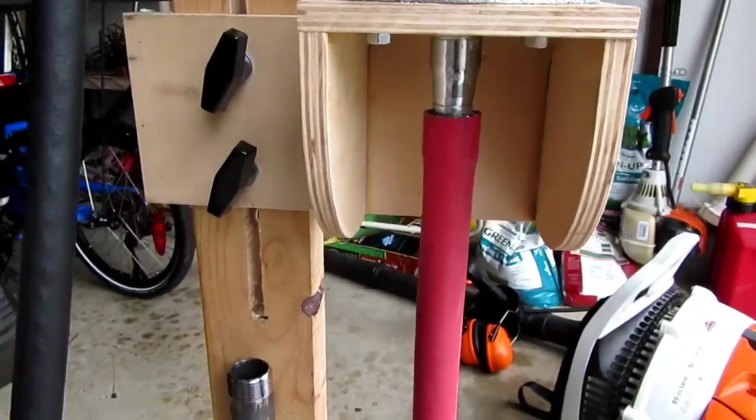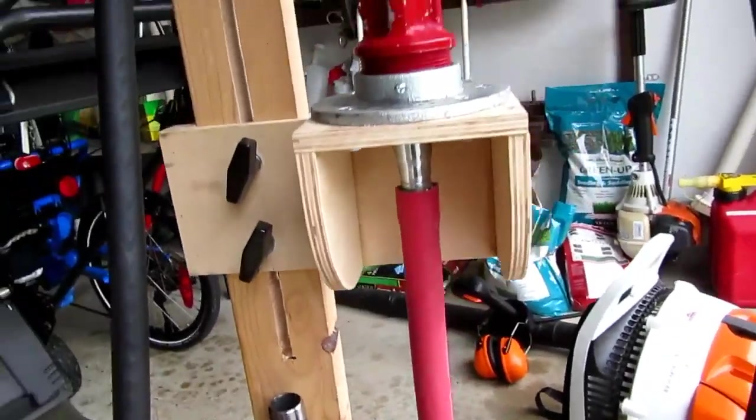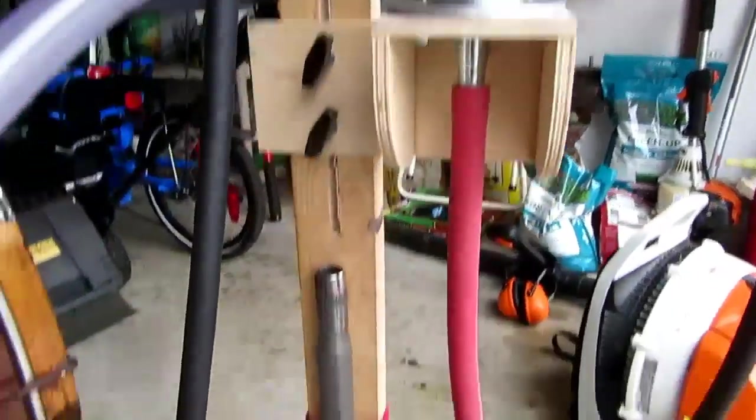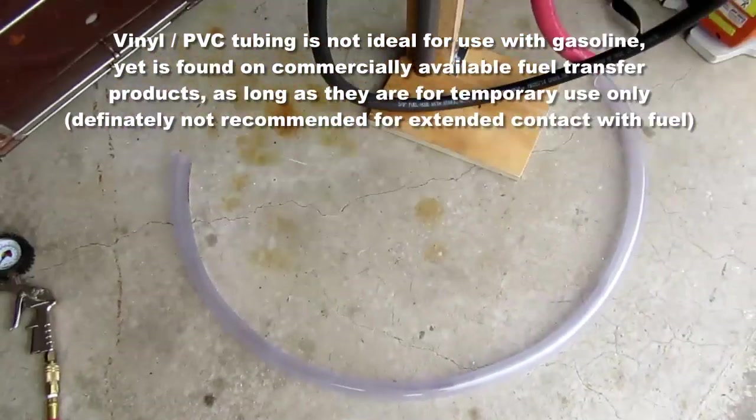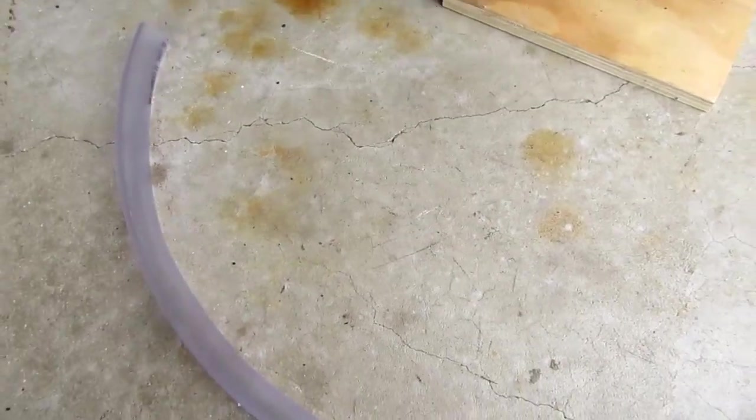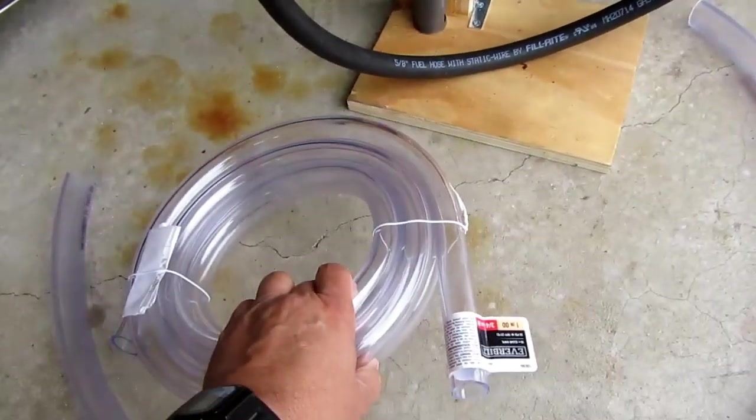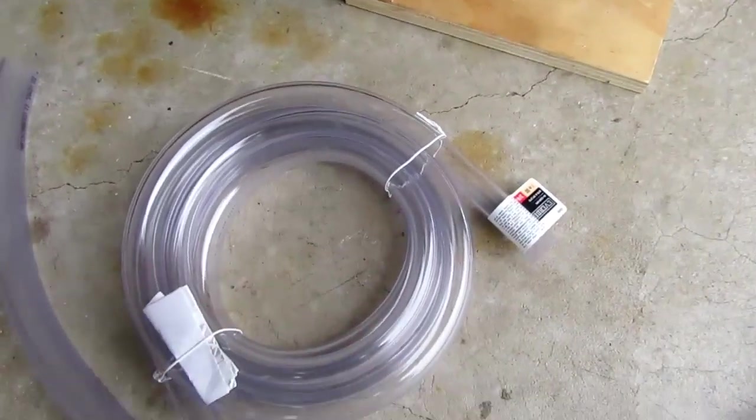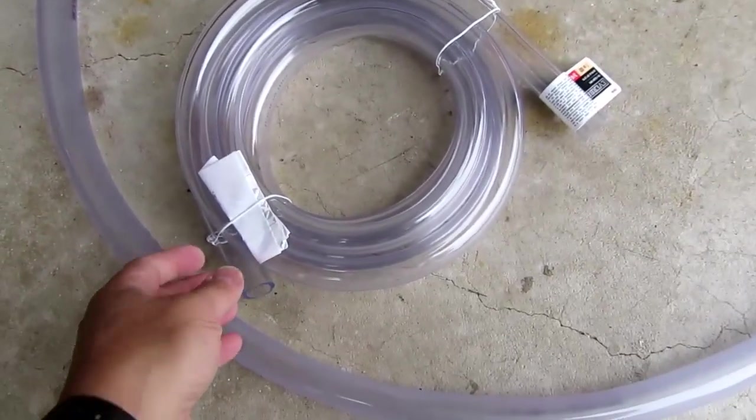So I've obtained a length of one inch ID vinyl tubing, and also for places where I need to get into smaller openings, some three-quarter inch ID vinyl tubing.